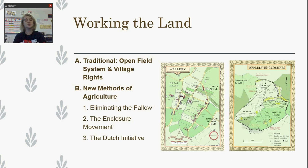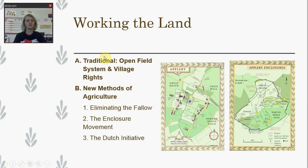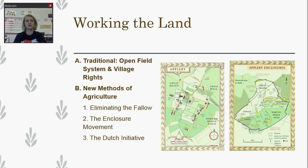What they also do is start something called the enclosure movement. This is where landowners would basically take land that had been open field and start closing it off with fences or hedges. Looking at these two maps, the great heath is some of that open land, and you can see it's now been closed off. This really hurt the poor people who had been using the open field system — even though more food was available, less land was available to actually farm, causing a big problem for poor people in rural areas getting the food sources they needed.